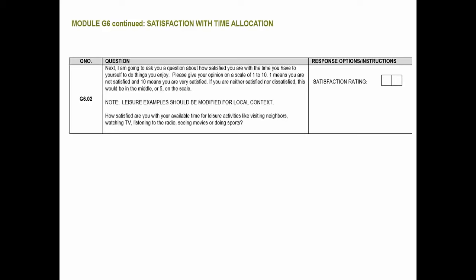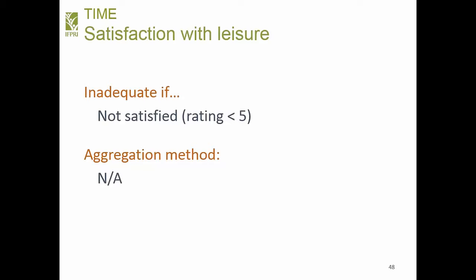The second time use indicator is leisure satisfaction. Respondents rate on a scale of 1 to 10 how satisfied they are with their available time for leisure activities like visiting neighbors, watching TV, or listening to the radio, where 1 is not satisfied and 10 is very satisfied. If they're not satisfied, they're inadequate. There's no aggregation since it's one question. Interestingly, women tend to report higher satisfaction with leisure than men, likely due to lower expectations — and this pattern is consistent across many countries.